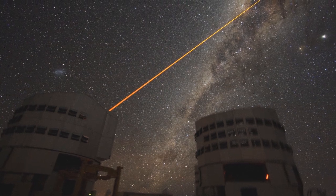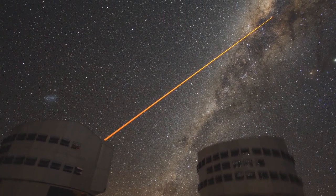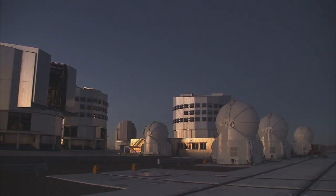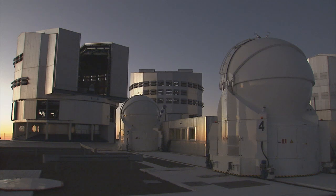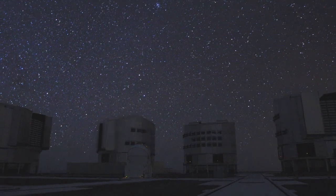But the team doesn't plan to stop here. Now in the past they've used the novel technique of adaptive optics to remove the blurring effects of the atmosphere. In the future they plan to do even better and to get even higher resolution images by using another new technique called interferometry. This is where you combine the light from two or more of the VLT's unit telescopes together.